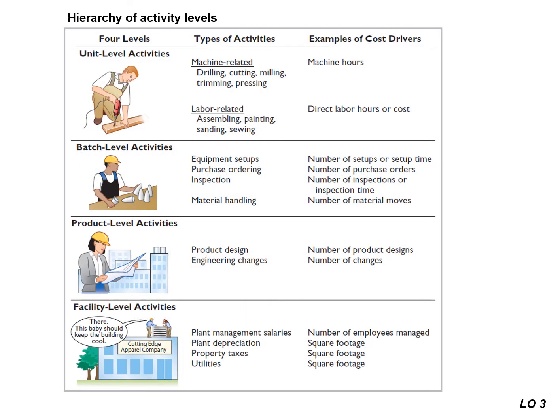Companies can achieve greater accuracy in overhead cost allocation by recognizing these four different levels of activities and from them developing specific activity cost pools as well as identifying a related cost driver. Let's take a look at the types of activities as well as examples of cost drivers for each activity level.